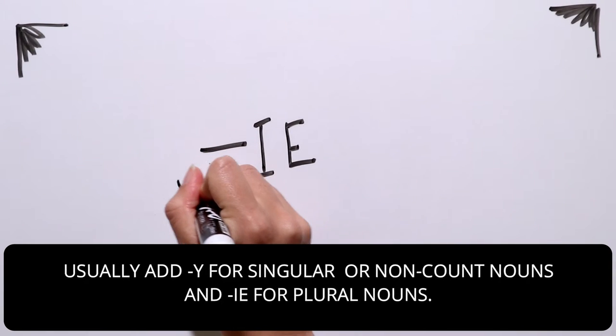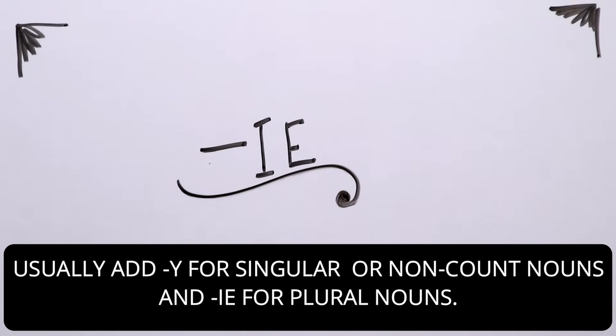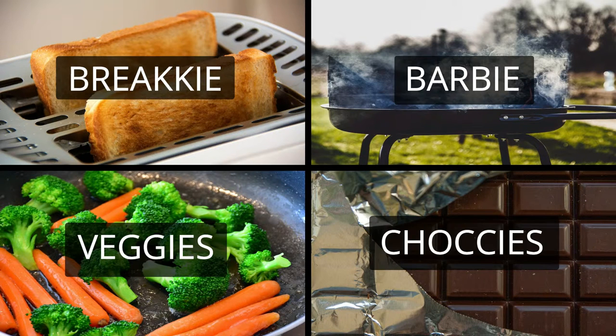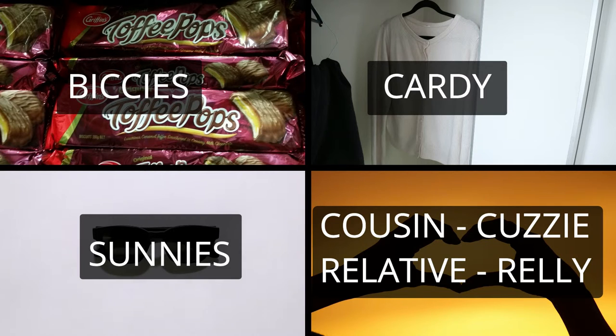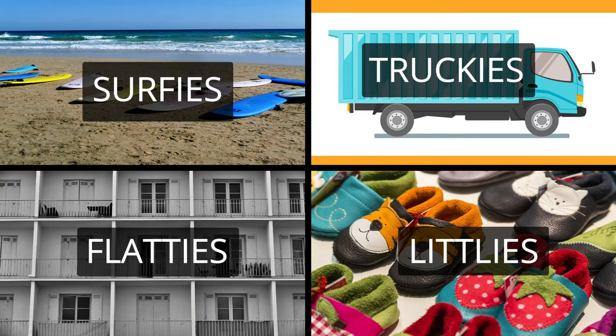It's very popular in casual conversation to add the sound e to the end of many nouns. This makes words such as brekkie for breakfast, a barbecue is a barbie, vegetables are veggies, chocolates are chockies, biscuits are bickies, sunglasses are sunnies, cardigans are cardies, and for people, cousins are cuzzies, relatives are rallies, surfers are surfies, truck drivers are truckies, flatmates are flatties, and very young children are sometimes called littlies because they are so small.